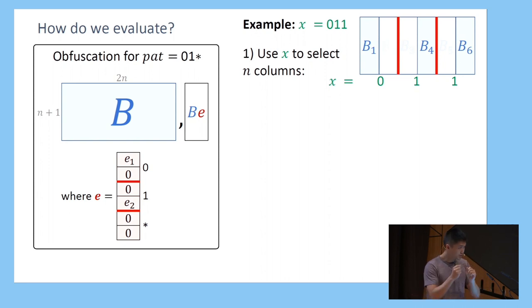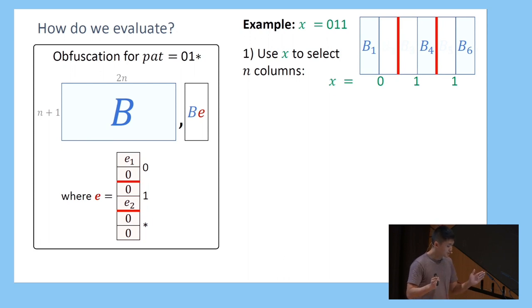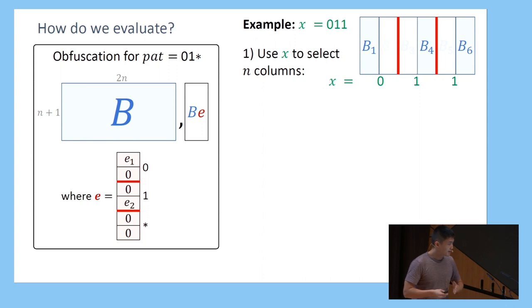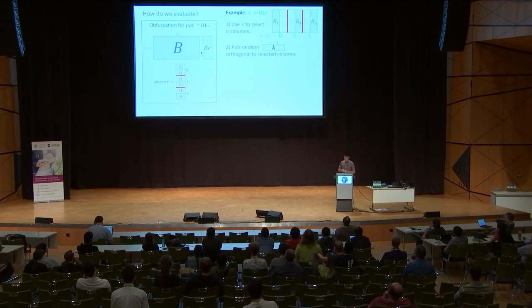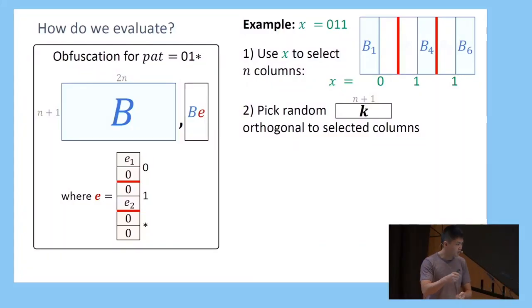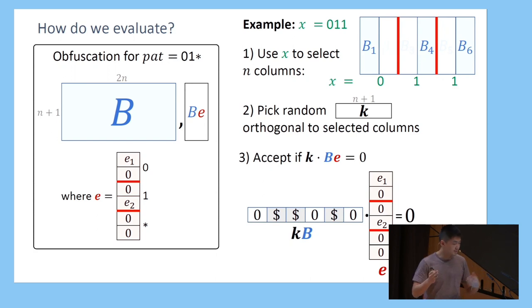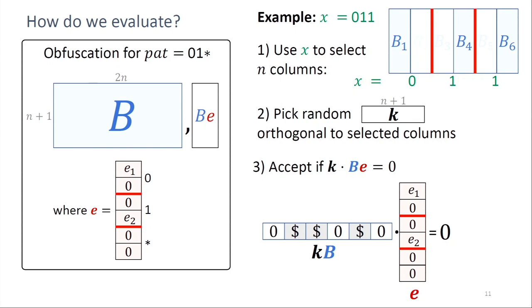We're going to use x to select n columns out of B. B is width-2n and we break it into n blocks of two columns. In the i-th block, if x_i is 0, I select the left column; if x_i is 1, I select the right column. So for x = 0, 1, 1, I'm selecting columns b1, b4, and b6. Next, I pick a uniformly random vector k that's orthogonal to all my selected columns — such a k exists because the columns are n+1 dimensional and I'm picking n of them. Then I multiply k by B·E to get a scalar, and if that scalar is 0, I accept; if non-zero, I reject.